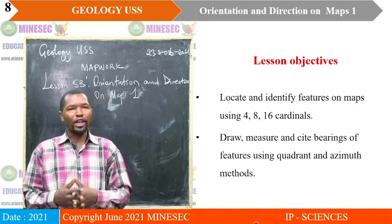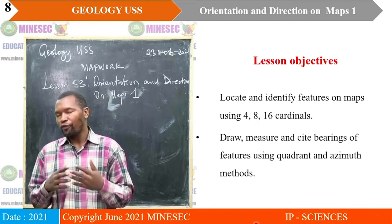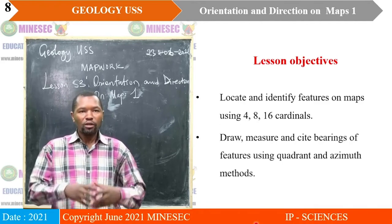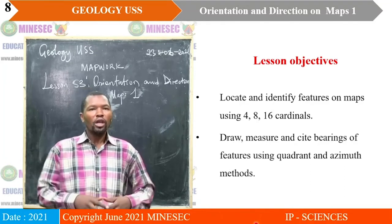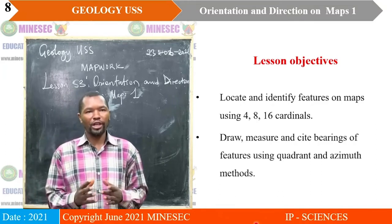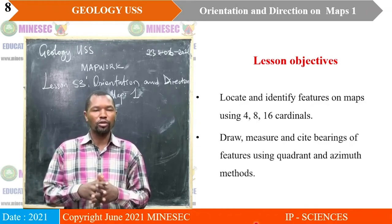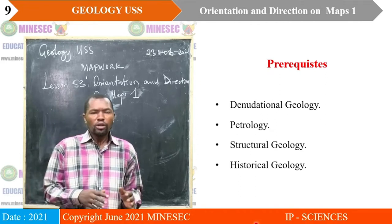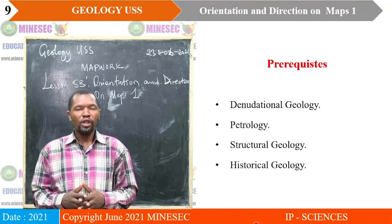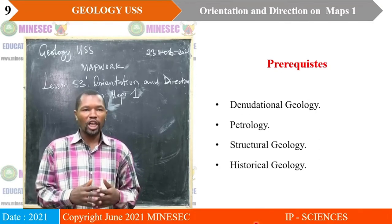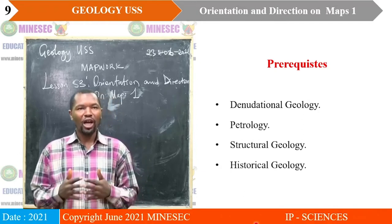As we look through orientation and direction on maps 1, we will be able to locate and identify features on maps using 4, 8, and 16 cardinals. We shall also be able to draw, measure, and sight bearings of features using quadrant and azimuth methods. We need knowledge on denudational geology, petrology, structural geology, as well as historical geology, in order to better assimilate our lesson.